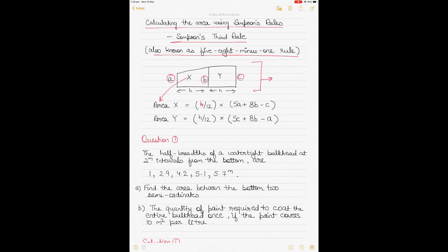H is the equidistant spacing on the length of the straight line — the distance between the ordinates which are equally spaced is called H. So H/12 multiplied by 5A plus 8B minus C will give you Area X, and Area Y is calculated by a corresponding formula.